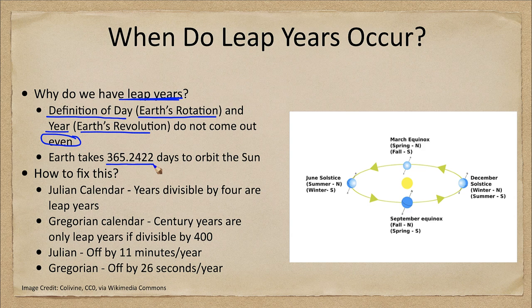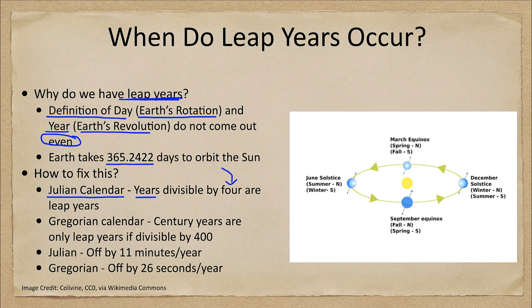This was originally fixed back in Roman times. Julius Caesar gave us the Julian calendar, which says that years divisible by four are leap years. That's why we say that every fourth year is a leap year. However, this is not entirely correct, because we're still going to be slightly off.